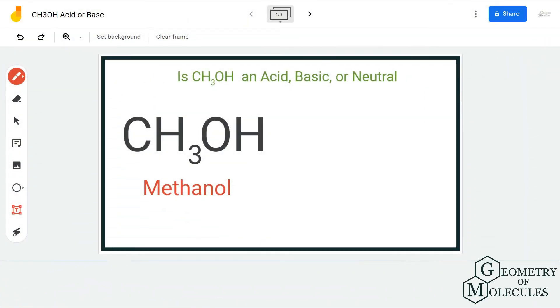Hi guys, welcome back to our channel. In today's video we're going to help you determine if CH3OH is an acid or base. Now it's quite debatable because it has properties of both acid and base and hence it is considered as amphoteric.